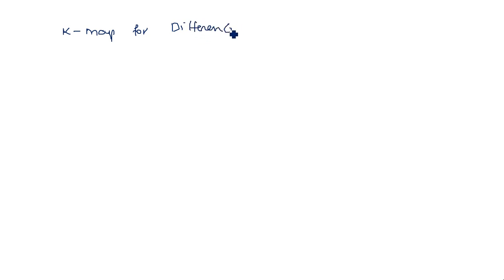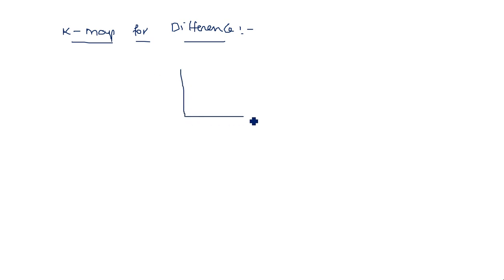Now we obtain the expressions using K-maps. K-map for difference — this is a three-variable K-map.